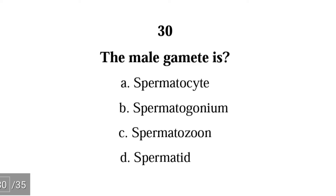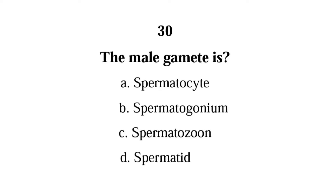Number thirty: the male gamete is — spermatocyte, spermatogonium, spermatozoon, or spermatid? The correct answer is C, spermatozoon. Spermatozoon is the male gamete; the rest are male germ cells.